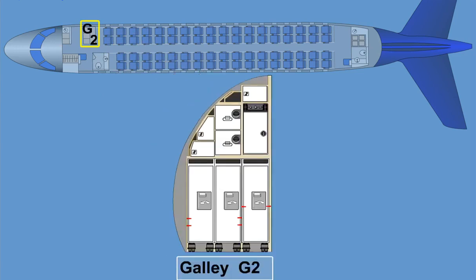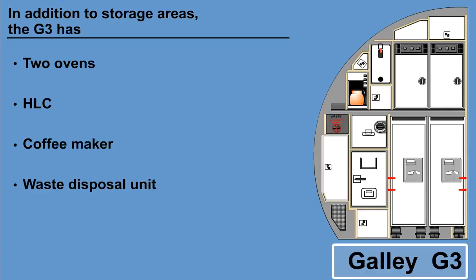The G2 is equipped with one oven. In addition to storage areas, G3 has two ovens, one HLC, a coffee maker, and a waste disposal unit.